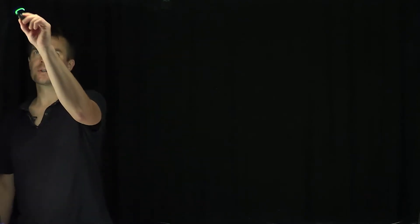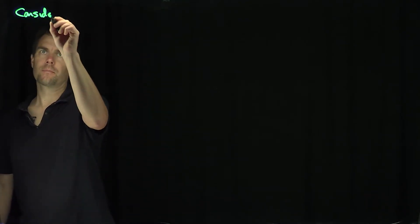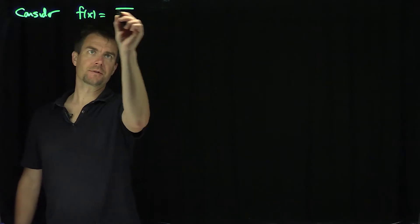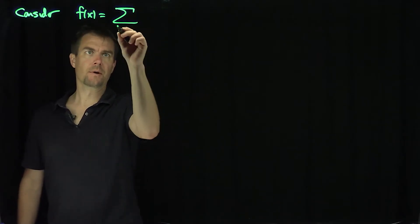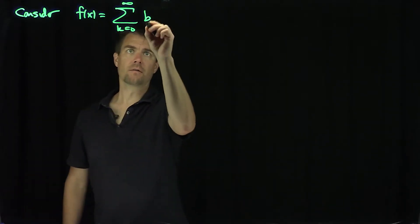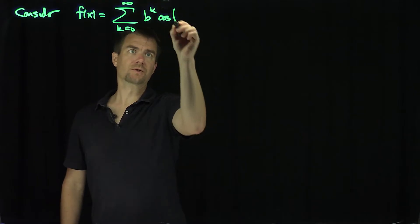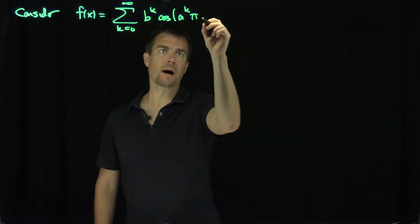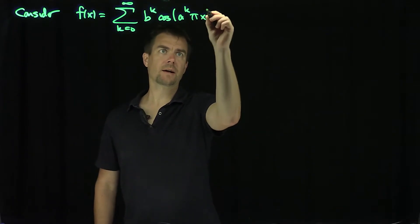Hello, students. In this video, we'll discuss the Weierstrass function, which is everywhere continuous but nowhere differentiable. Let's consider the function f of x defined by this infinite series: the sum k goes from 0 to infinity of b to the power k times the cosine of a to the power k pi x.